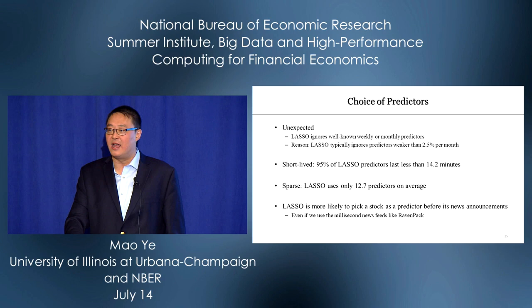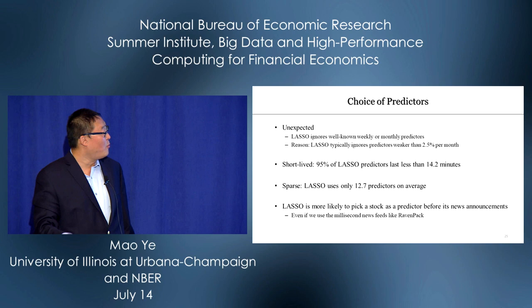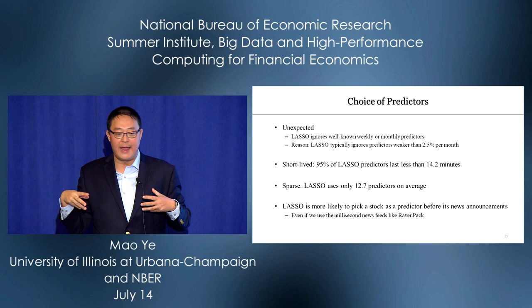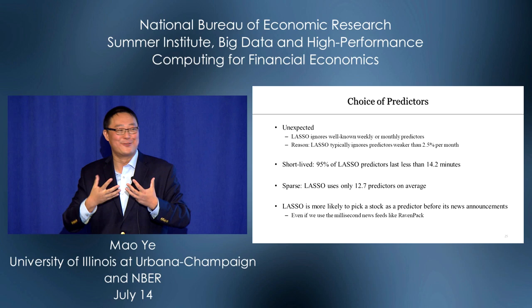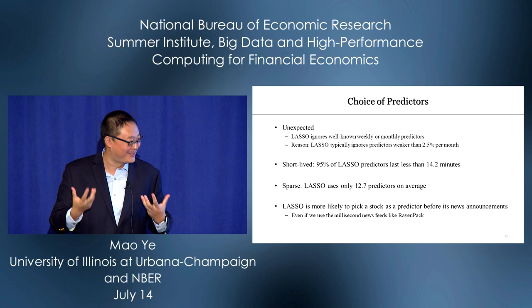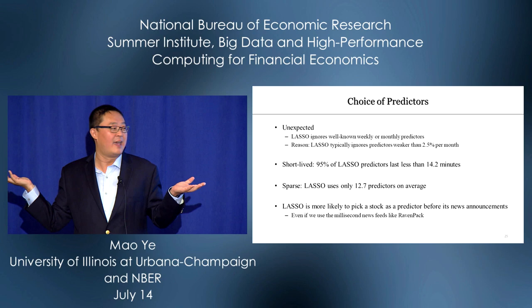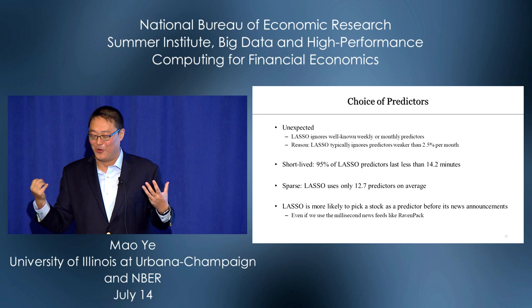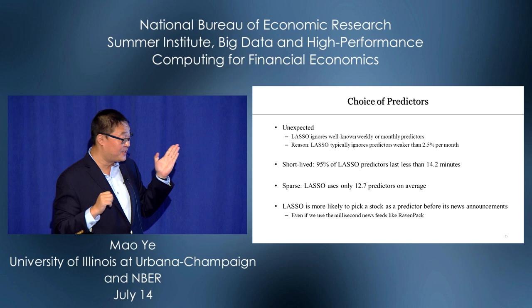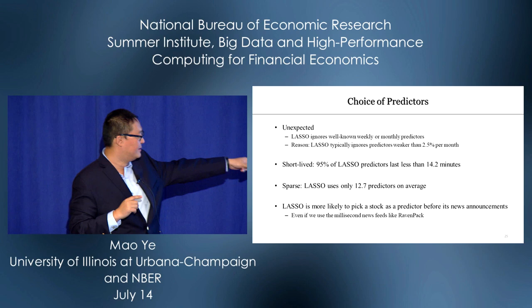Alex, Adam, and I establish four results. First, it's unexpected: many well-known factors suggest large stocks predict small stocks at weekly or monthly horizons, but we find this does not work well at short horizons. LASSO typically ignores any predictor weaker than 2.5 per month. Many weekly or monthly predictors cannot generate these high returns. But will you become super rich? No — the answer is there's a trade-off. 95% of LASSO predictors at the minute-by-minute horizon disappear within 14.2 minutes.